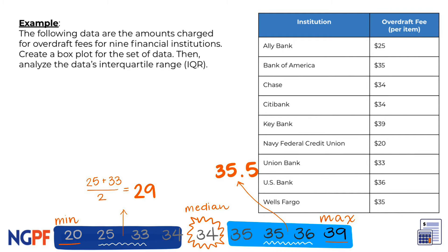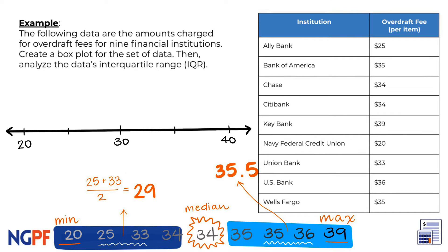Now we can begin drawing our box and whisker plot. First, I will sketch out a number line. We can plot the minimum 20 here, then our Q1 of 29 here. We also have our median of 34, our Q3 of 35.5, and our last point, the maximum, which is 39.